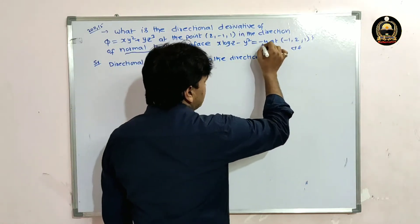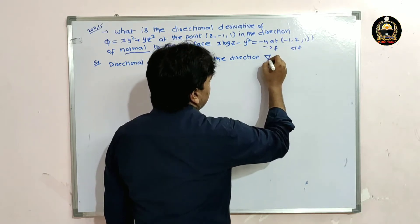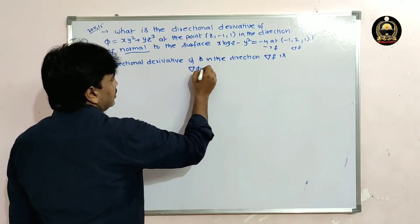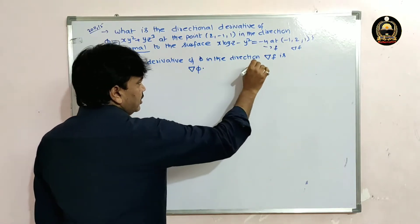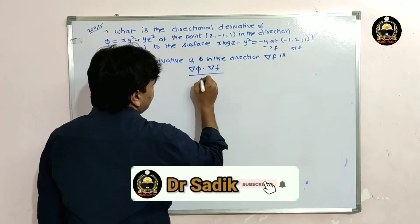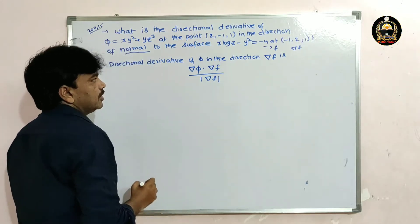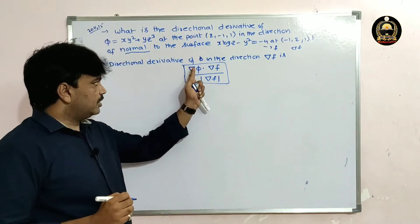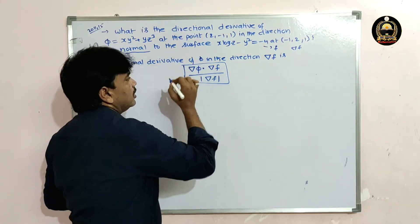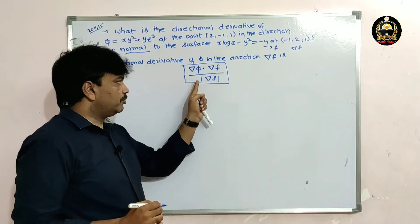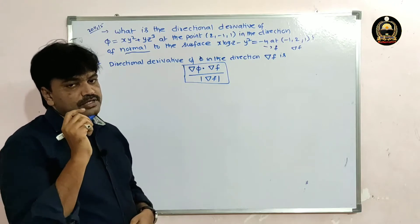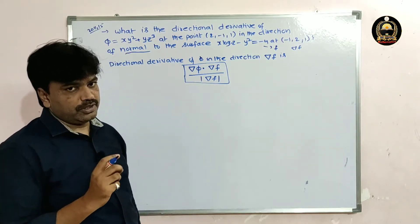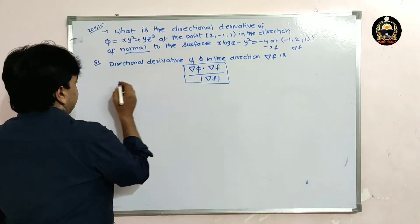Here the direction vector is del f. So in the direction del f, the directional derivative formula becomes: del phi dot del f divided by modulus del f. Previously we had 'a bar'; now we have del f. So the directional derivative formula is: del phi · del f / |del f|.